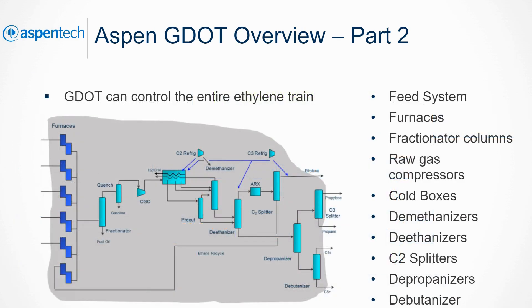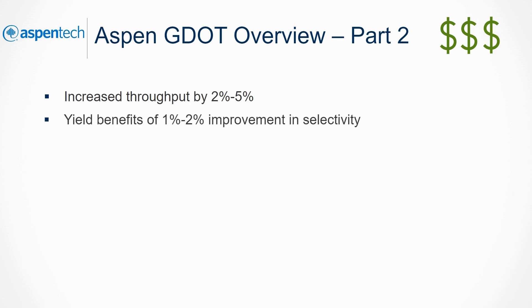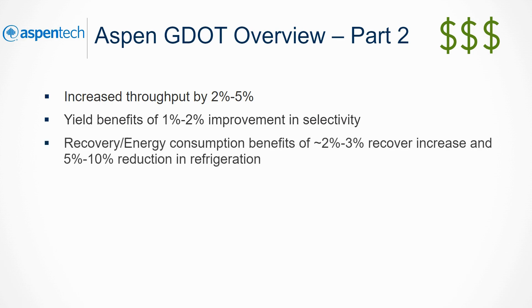When using GDOT to optimize ethylene production, it can consider every unit in the plant. If multiple ethylene trains exist on one site, GDOT can optimize while considering both trains. Using GDOT to optimize ethylene production has many benefits, such as increasing throughput by 2–5%, increasing selectivity by 1–2%, increasing recovery by 2–3%, and a 5–10% reduction in energy consumption.